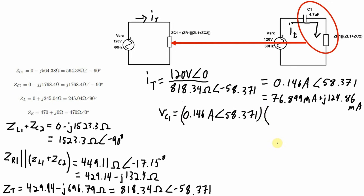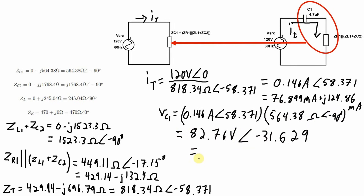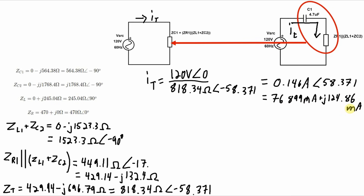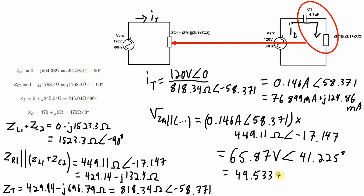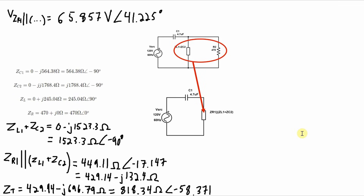That calculation is the current through capacitor 1 times the impedance of capacitor 1, and we can do the same basic calculation for the voltage across this combination of components. The value I need now, going back a step from this second equivalent circuit to this first equivalent circuit, is the voltage across the combination of R1 in parallel with L1 plus C2. Since those components are in parallel, the voltage I've just calculated is the same as the voltage across L1 plus C2 as well as the voltage across resistor 1.